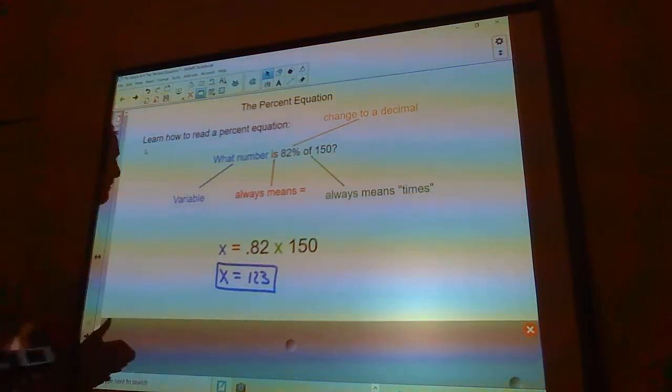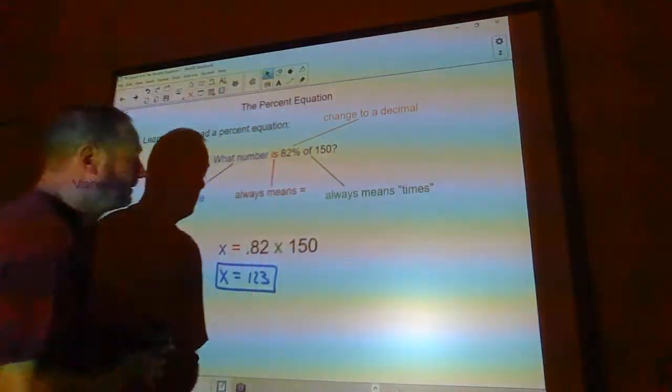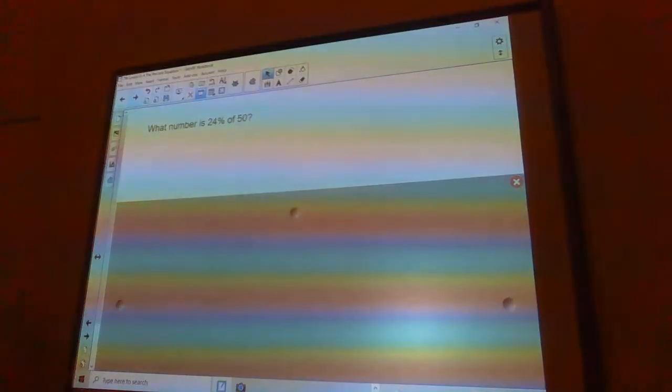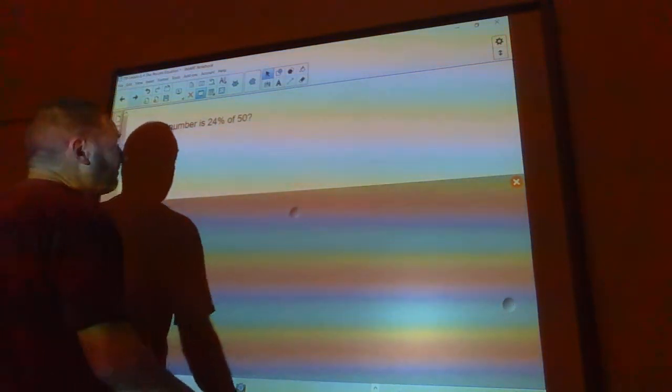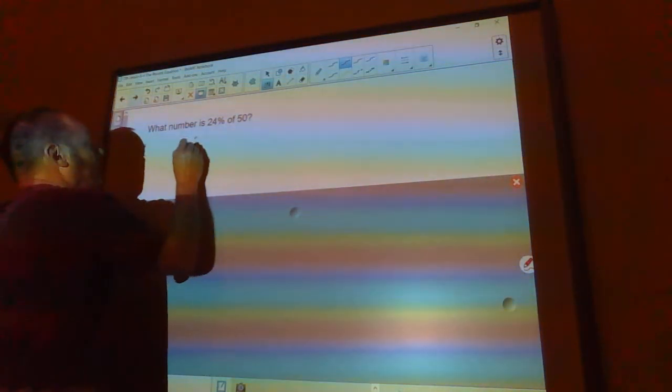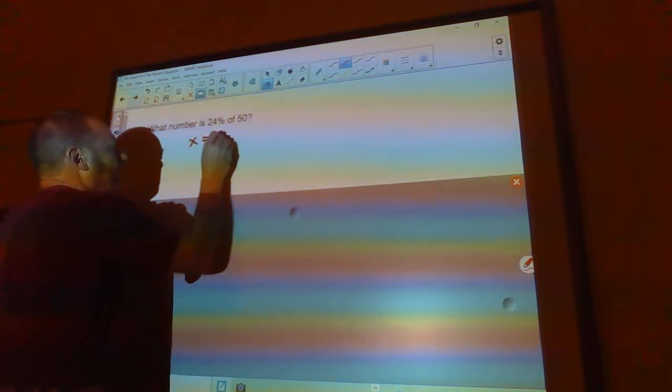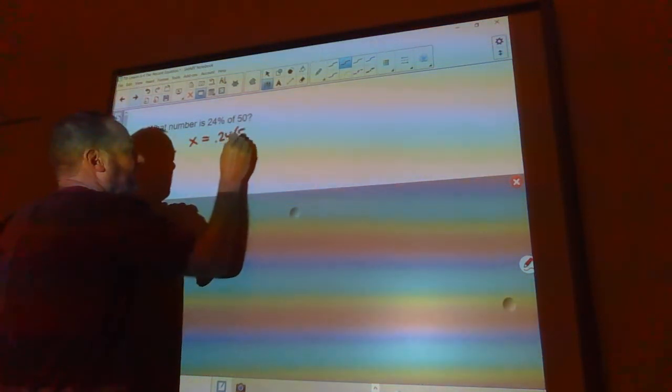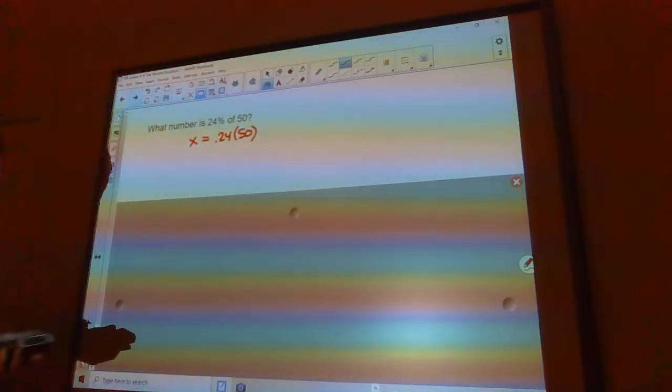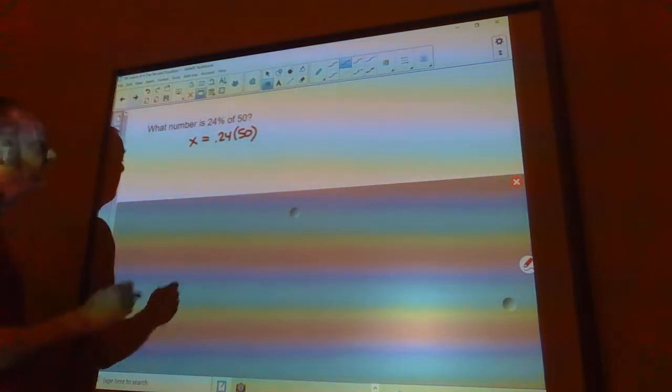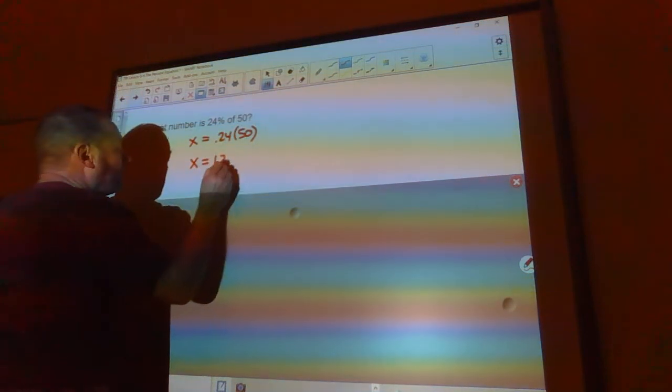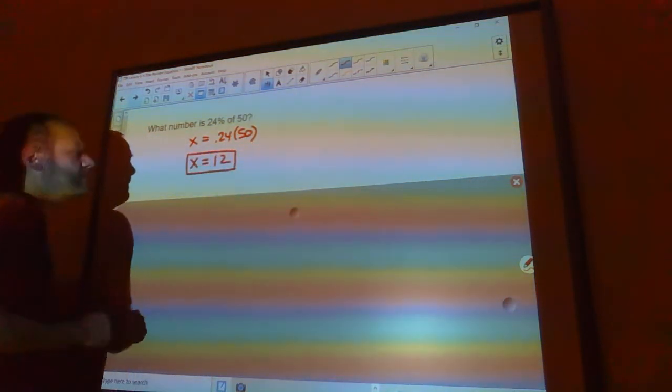So, moving right along. What number is 24% of 50? Okay, so what number? x is equals 0.24 times 50. Okay, 0.24 times 50. That's 12. x equals 12. Piece of cake.